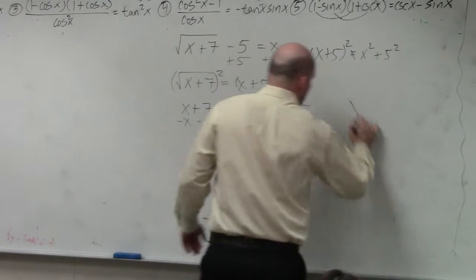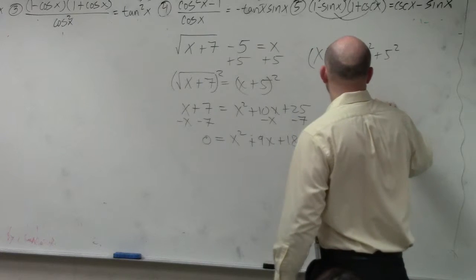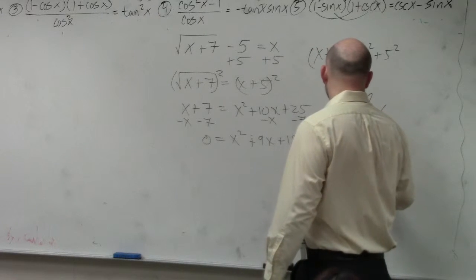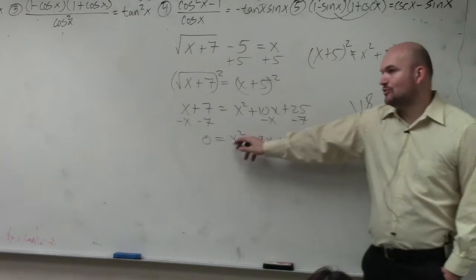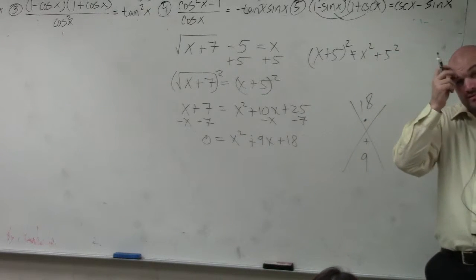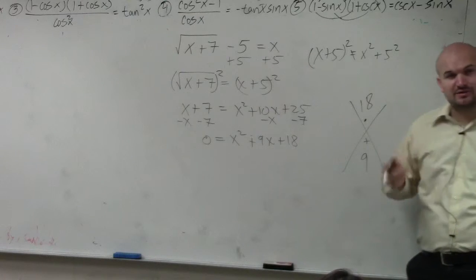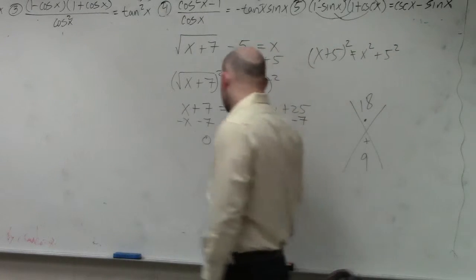So if you guys remember what we did for factoring, we're basically saying what two numbers multiply to give you 18 and then add to give you 9, right? Because a is equal to 1. So we can just use that. So you think about it. What two numbers multiply to give you 18 and add to give you 9? 6 and 3.